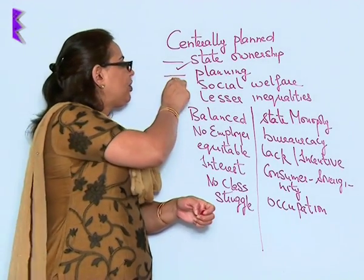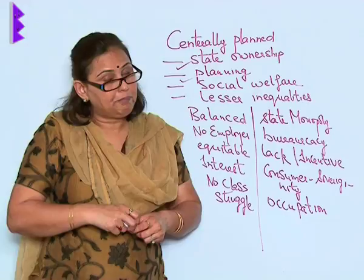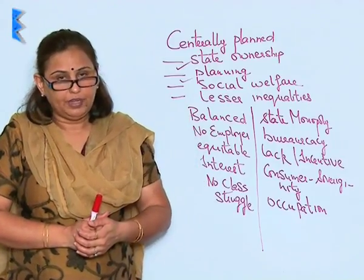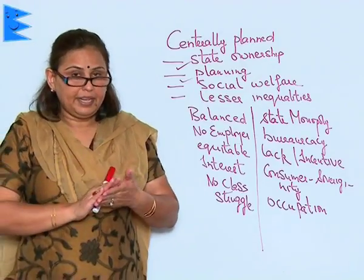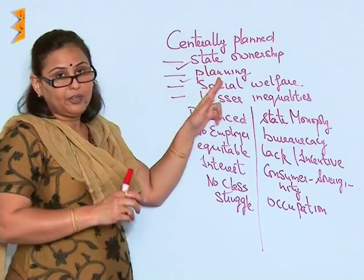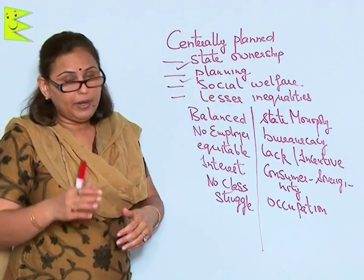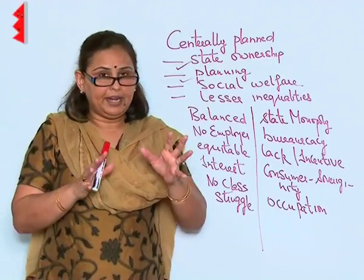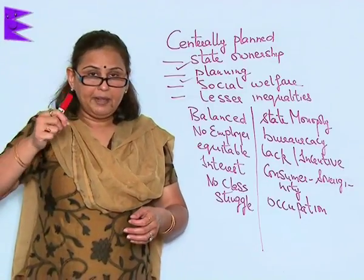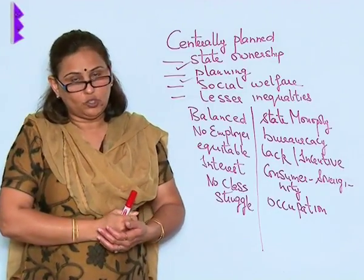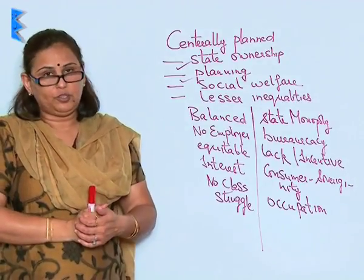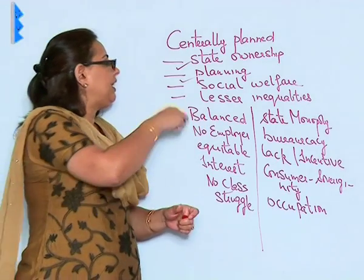The second feature is that planning plays an important factor in the centrally planned economy. The planning is done in such a way that everybody gets a good or equal share — that is the motive behind such an economy. The government plans to use its resources for the best allocation and distribution.